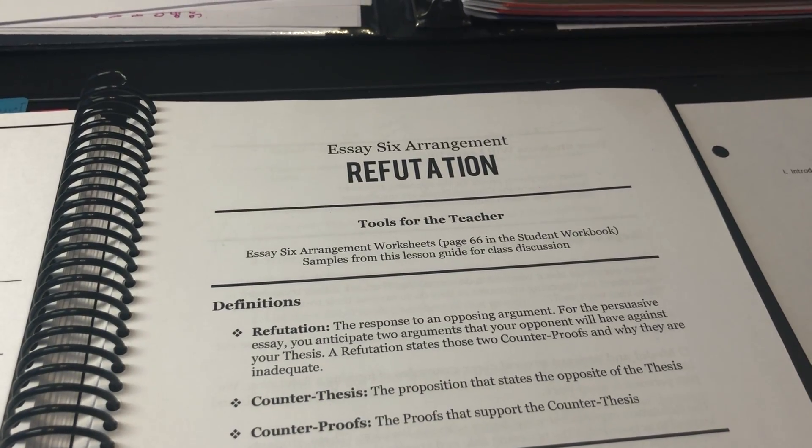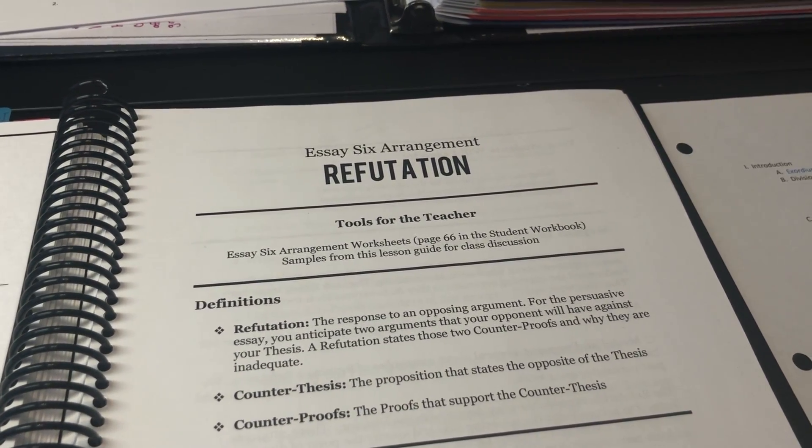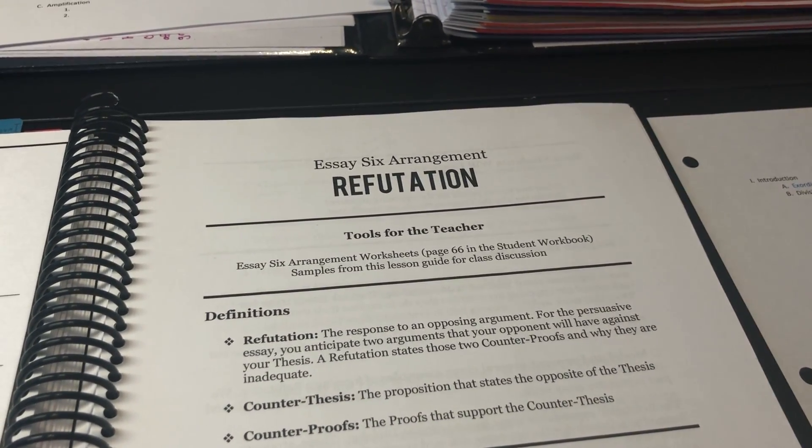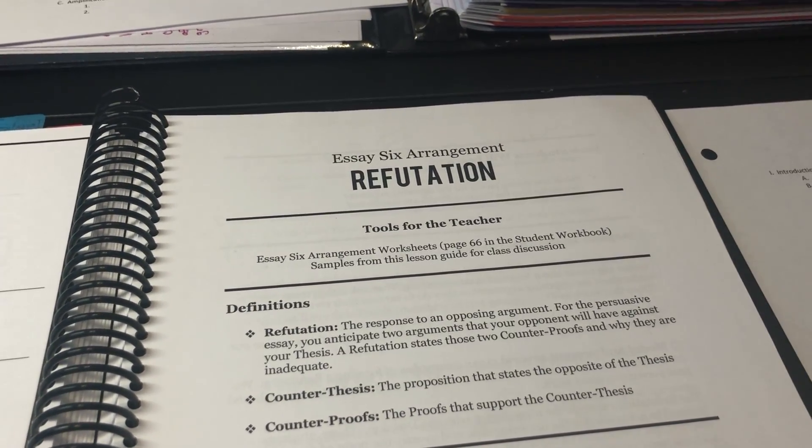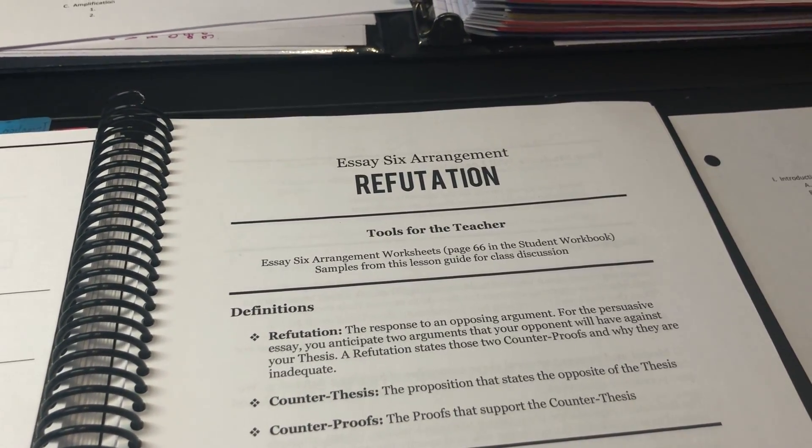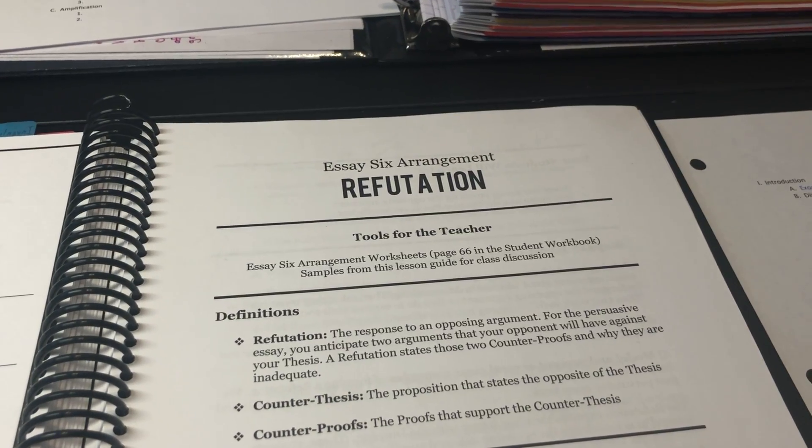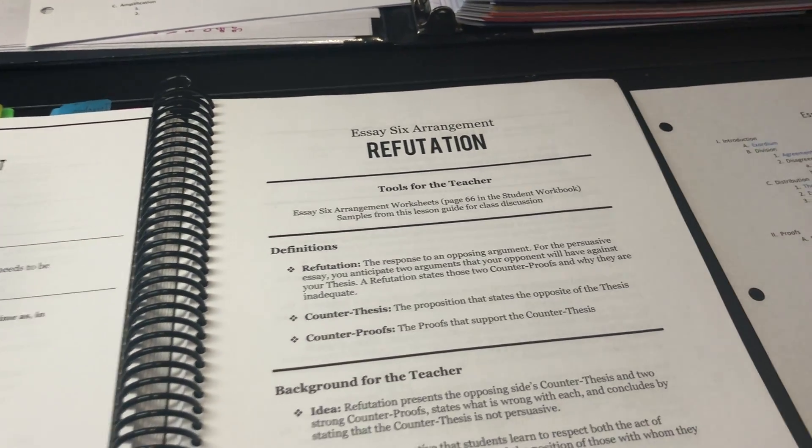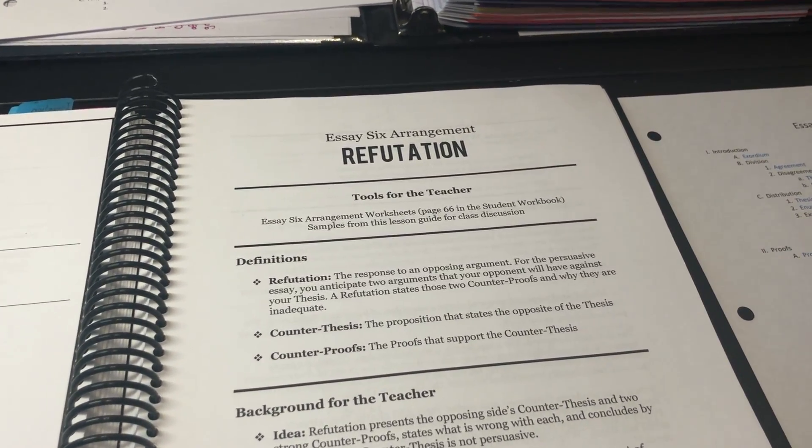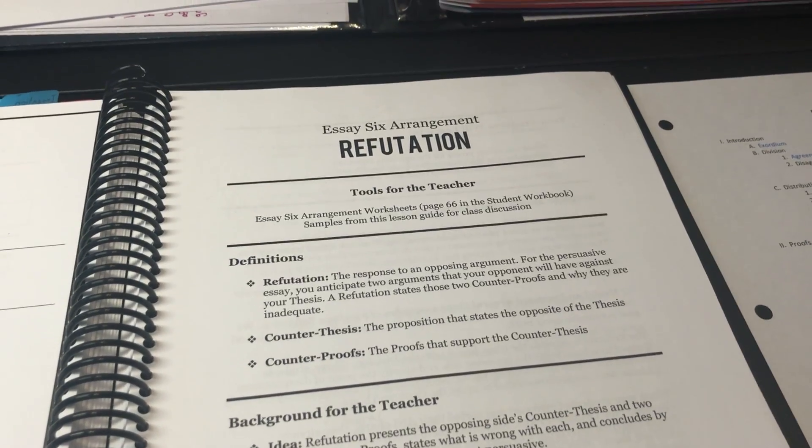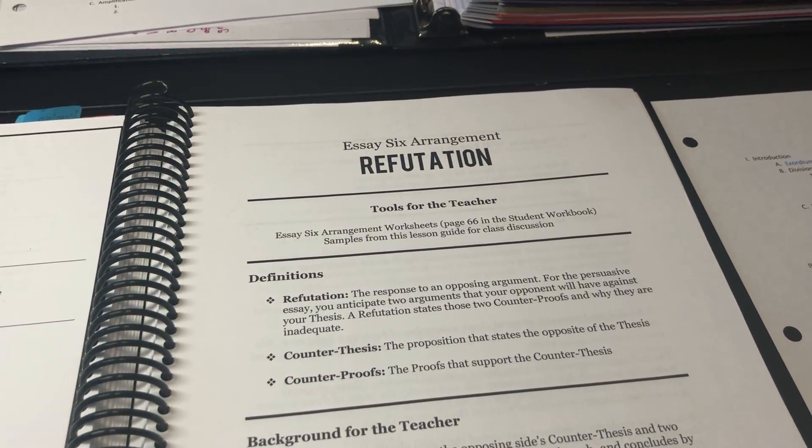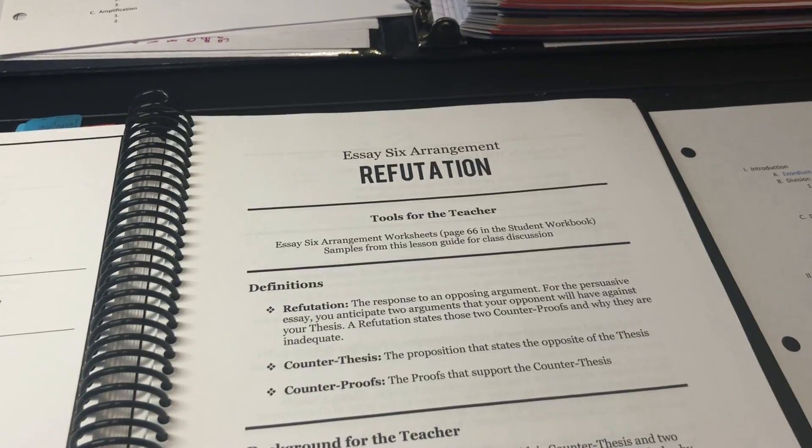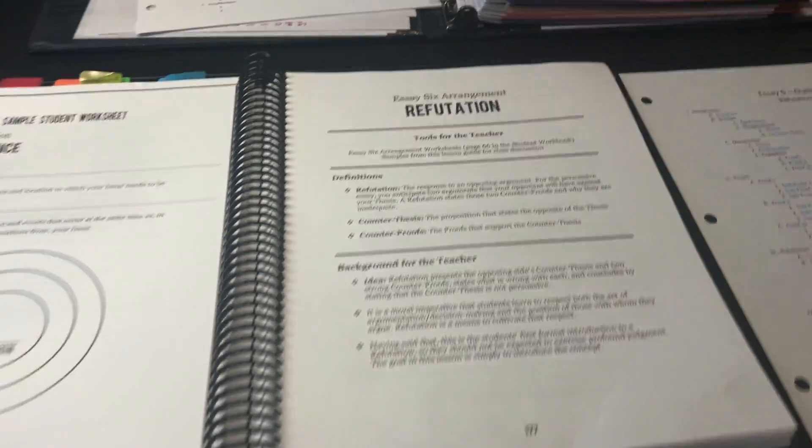Here's how we approached it. First of all, last week in class we had built this really fantastic Annie chart with a lot of great conversation. Our class issue was whether Bear should have forced Crispin to take the oath, becoming his bondservant. When I got home, I typed it up into some clear points.